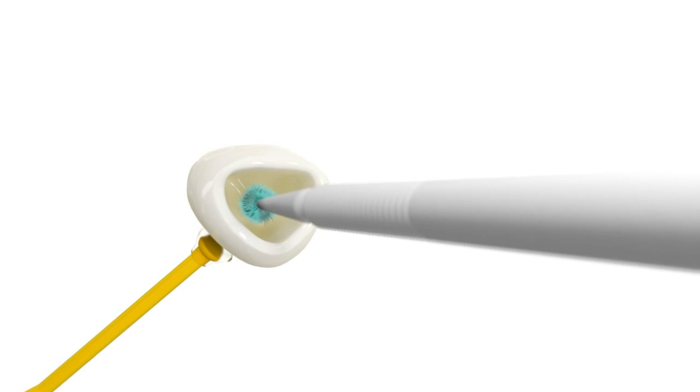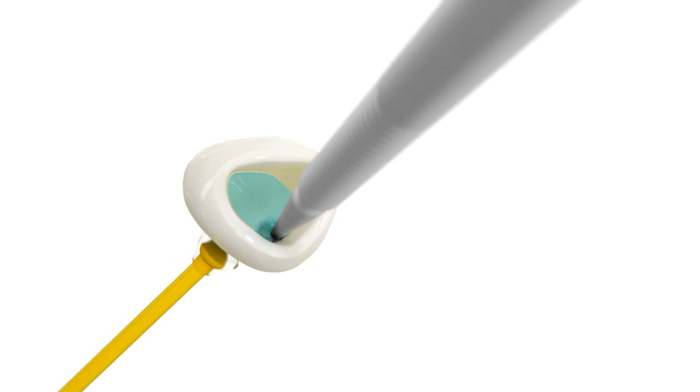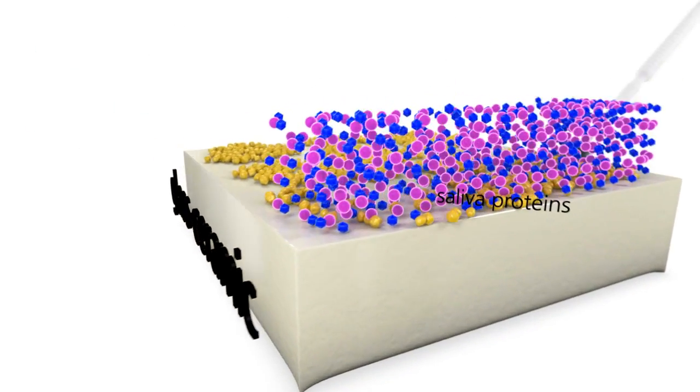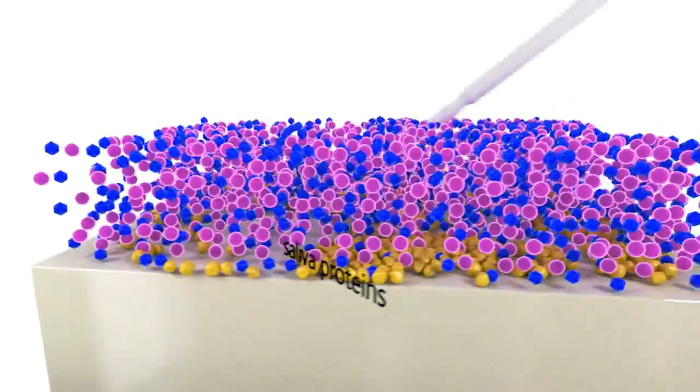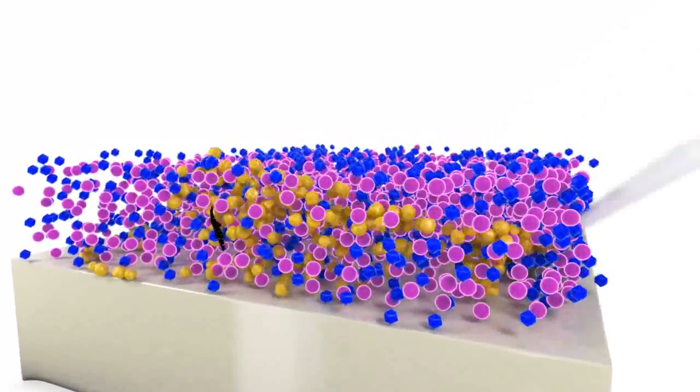Monobond Etch & Prime is applied on the glass ceramic surface using a micro brush and agitated on the surface for 20 seconds. During this time, Monobond Etch & Prime cleans the ceramic from adhering saliva proteins and silicone oils.